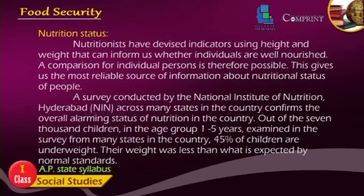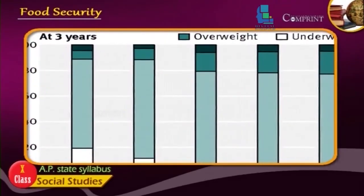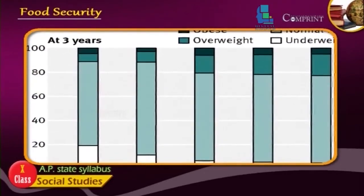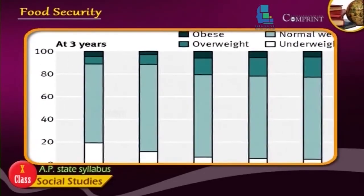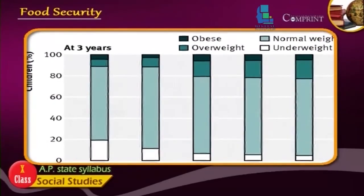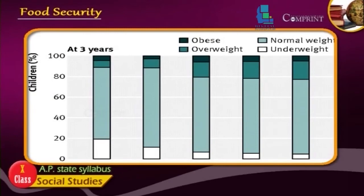Nutrients have diverse indicators using height and weight that can inform us whether individuals are well-nourished. A survey conducted by the National Institute of Nutrition (NIN), Hyderabad, across many states confirms an overall alarming nutritional status in the country. Out of 7,000 children in the age group of 1 to 5 years examined across many states, 45% of children are underweight — their weight was less than what is expected by normal standards.